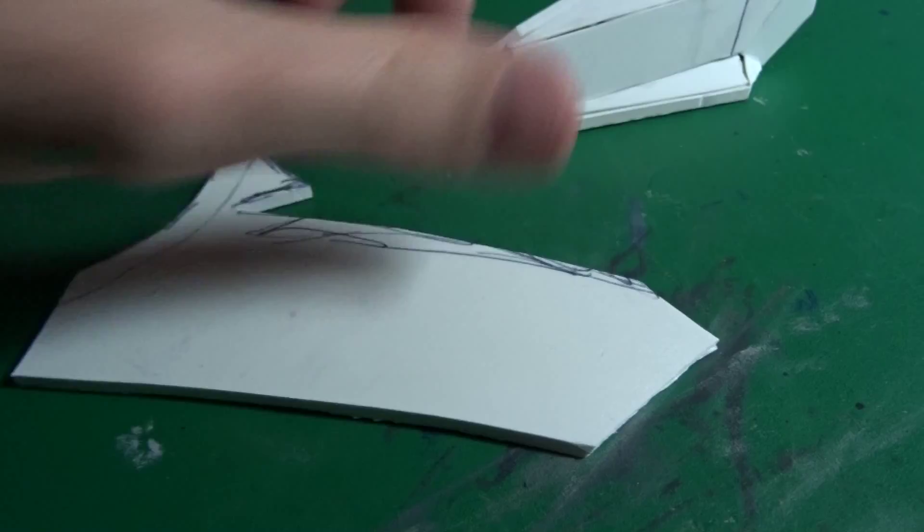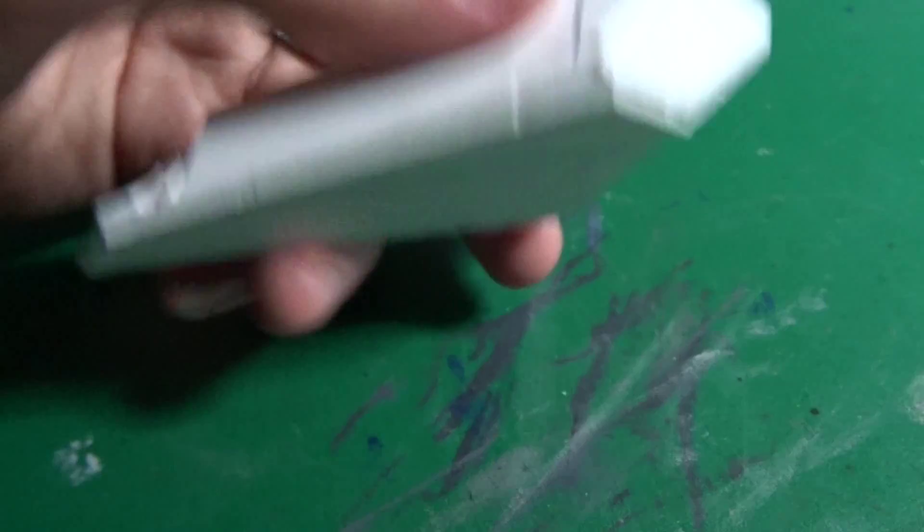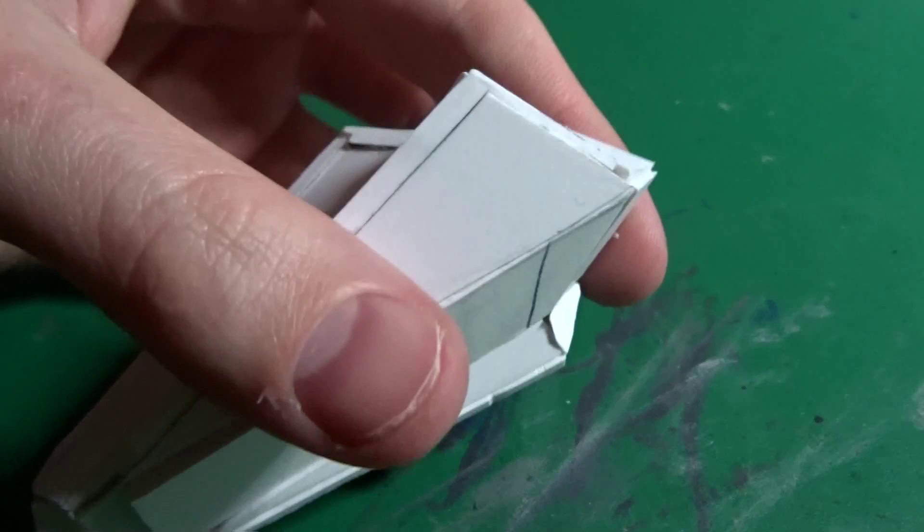Alternatively you could use cardboard or foam core for something like this if you can't get styrene. The next step is to fill up the holes, gaps, and seams.